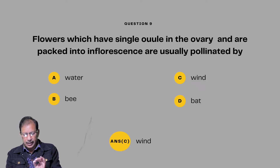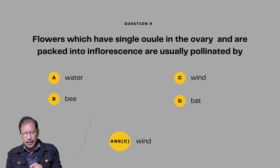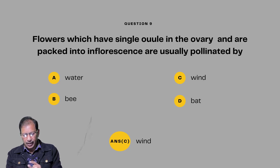Question number nine: Flowers which have a single ovule in the ovary and are packed into inflorescence are usually pollinated by — water, bee, wind, or bat. Answer: flowers with single ovule packed into inflorescence are usually pollinated by wind.